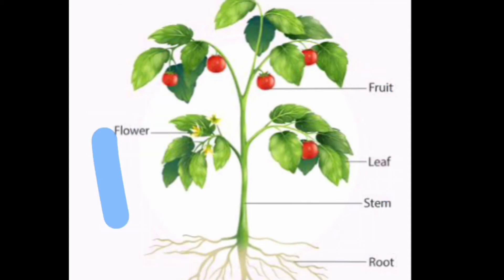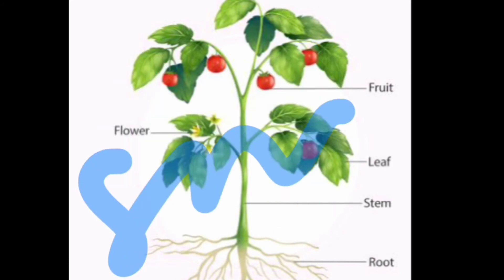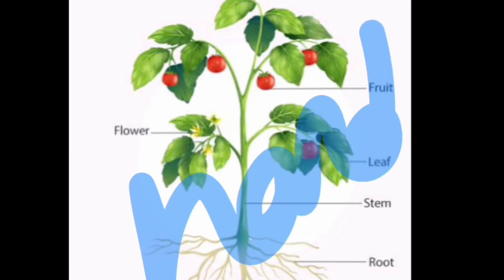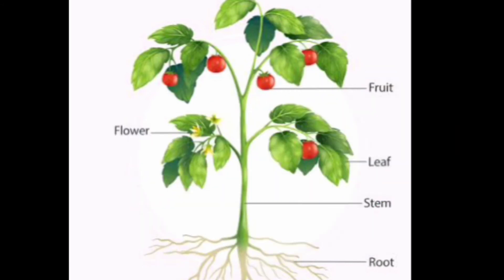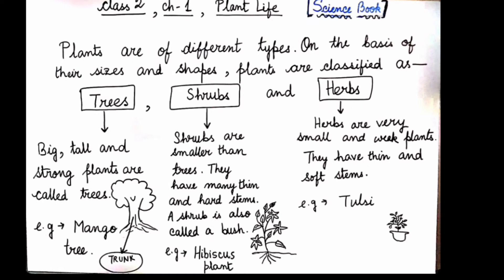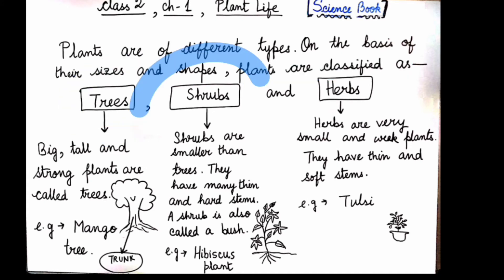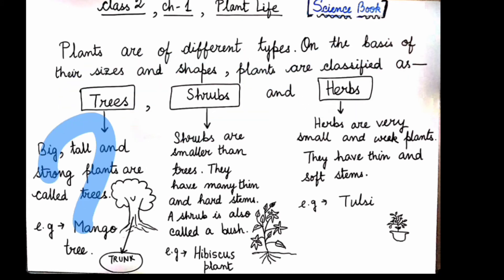Some are big plants while some are small plants. Some plants have soft stems while some have hard and woody stems. Plants are classified on the basis of their sizes and shapes into trees, shrubs, and herbs.